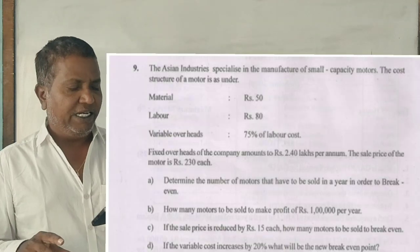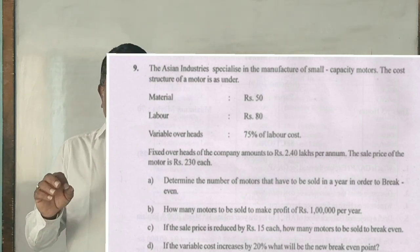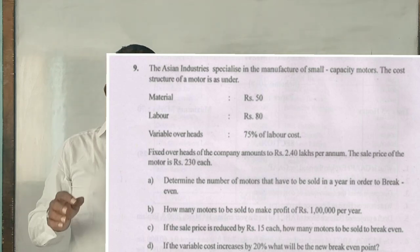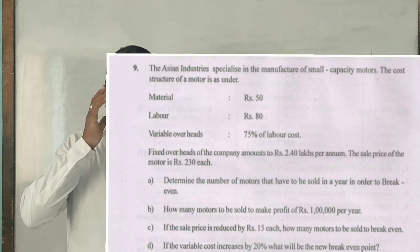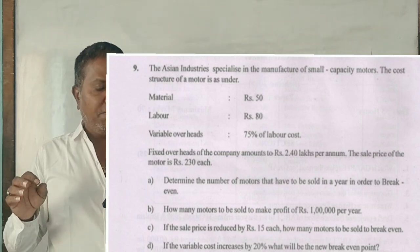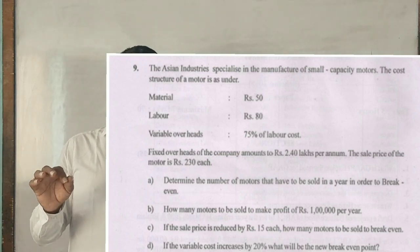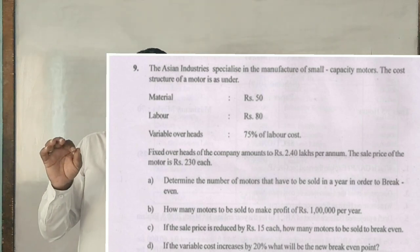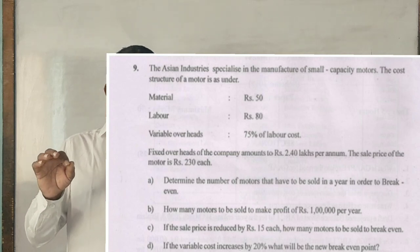Question: The Asian Industries specialize in the manufacturing of small capacity motors. The cost structure of a motor is as under: Material Rs. 50, Labour Rs. 80, Variable overhead 75% of labour cost. Fixed overheads of the company amounting to Rs. 2,40,000 per annum. The sale price of the motor is Rs. 230.